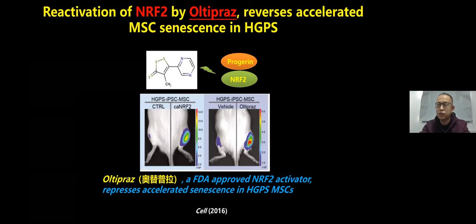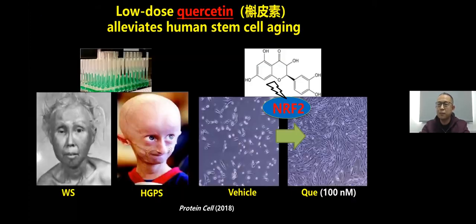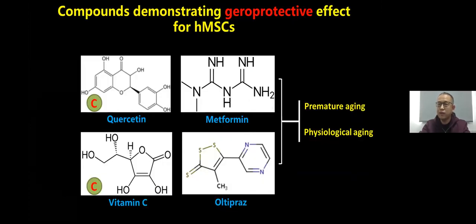We also found that activation of NRF2 by metformin delays human mesenchymal stem cell senescence. By further expanding the scope of drug screening, we found that low-dose quercetin can alleviate human stem cell aging. So far, we have identified a group of small molecule compounds with a geroprotective effect on human mesenchymal stem cells. Among them, we have initiated clinical trials using quercetin and vitamin C to treat human premature aging.